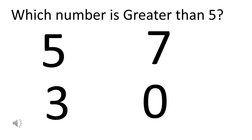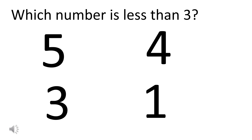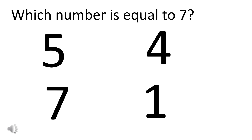Which number is greater than five? The answer is seven is greater than five. Which number is less than three? One is less than three. Which number is equal to seven? Seven is equal to seven.